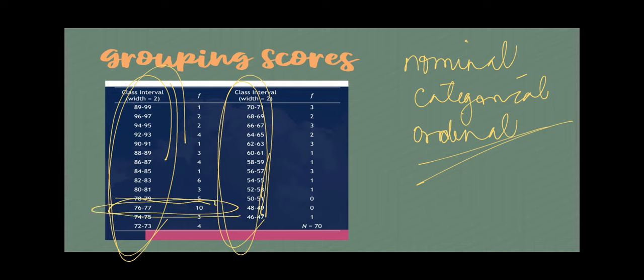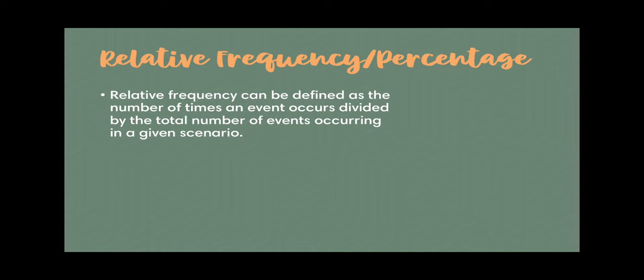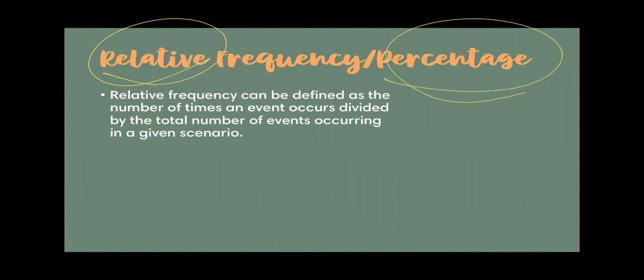For example, when you indicate 10 in a bracket, you don't know which of those 10 are 76 and which are 77. That's one of the downsides of grouping the scores. Usually, when we present the frequency distribution, we also present the relative frequency or percentage. Relative frequency or percentage can be defined as the number of times an event occurs divided by the total number of events occurring in a given scenario times 100.